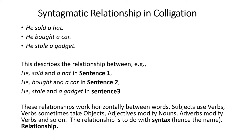Previously we discussed the paradigmatic relationship in collocation. In colligation, it is a syntagmatic relationship — from left to right. 'He sold a hat,' 'He bought a car,' 'He stole a gadget.' This describes the horizontal relationship between 'he sold' and 'a hat' in sentence one, 'he bought' and 'a car' in sentence two, and 'he stole' and 'a gadget' in sentence three.